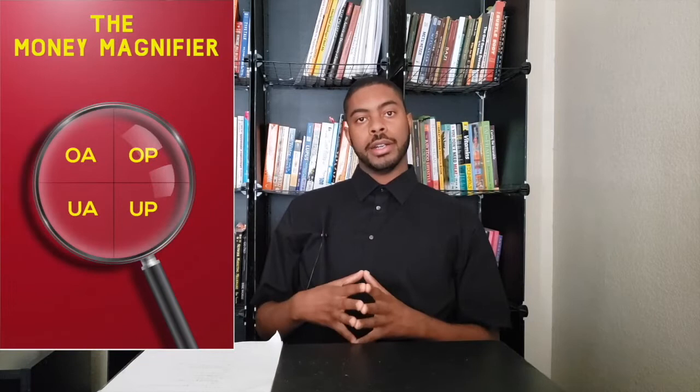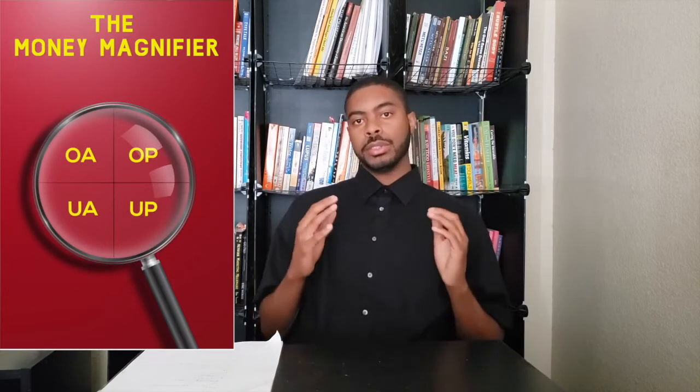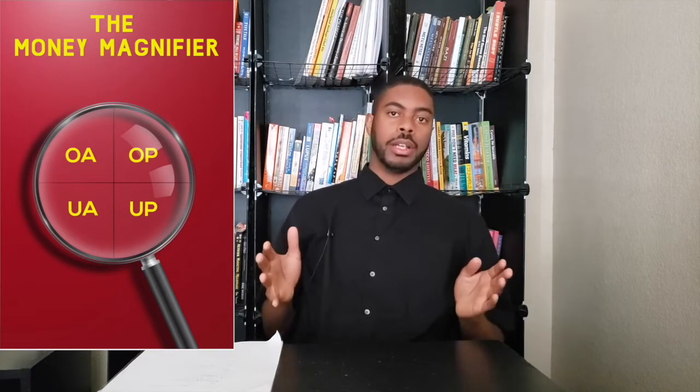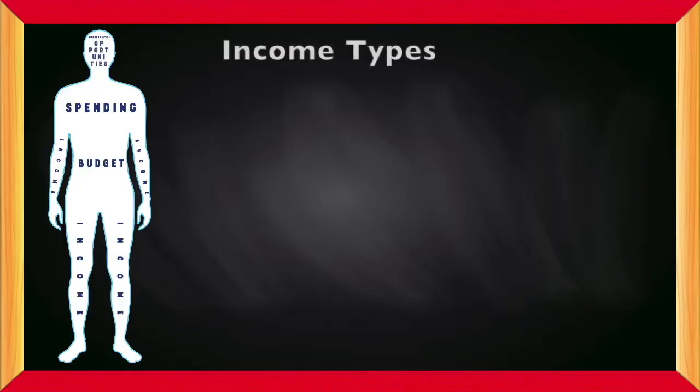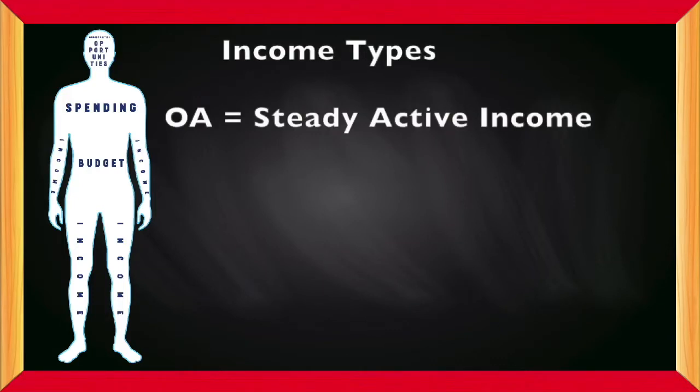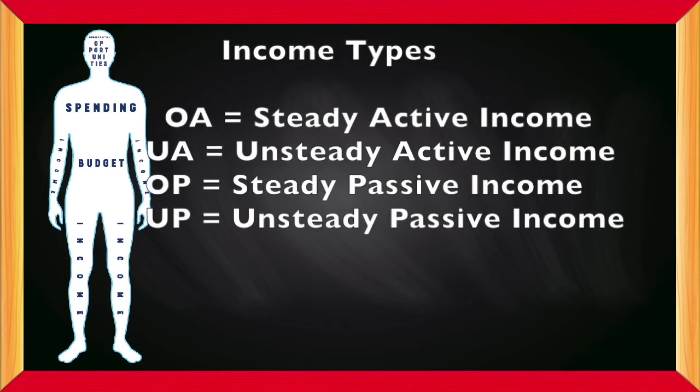Chapter four and specifically chapter five in my book, the anatomy of financial success focuses on income in general. And I also talk about the different types of passive income. So what you see on the screen here is called the money magnifier. And there are four types of income in this entirety. The O stands for orthodox and the U stands for unorthodox, but those are just other words for the word steady. So we're going to use that word here. So when looking at the four types of income in general, there's steady active income, there's unsteady active income, there's steady passive income, and unsteady passive income.